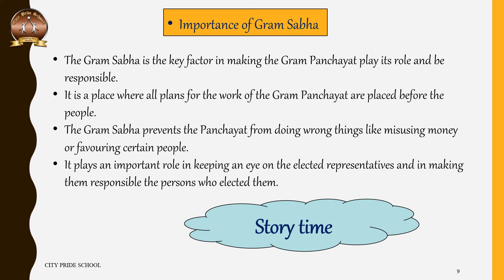The next item on the agenda of the Hardas village Gram Sabha was the finalization of the Below Poverty Line list, which had to be approved by the Gram Sabha. As soon as the list was read out, people began to whisper. They thought that Natwar, who had just bought a color TV and whose son had also sent him a new motorcycle, should not be on the poverty line list. Someone also asked why Birju's name was not on the list, as he too has good land.